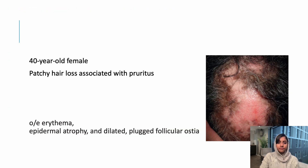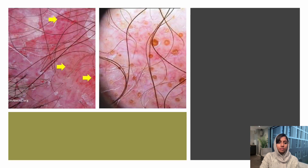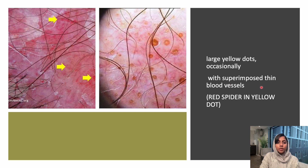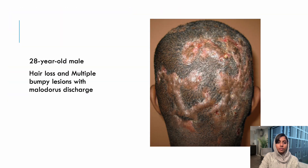The next scenario: a 40-year-old female with complaints of patchy hair loss associated with perifolliculitis. On examination, you can see erythema, epidermal atrophy, and dilated hair follicles plugged with keratin. On trichoscopy, there are yellow dots — dilated follicles filled with keratin — and also dilated blood vessels. This is a typical feature of discoid lupus erythematosus. The finding of large yellow dots with superimposed blood vessels is known as the 'red spider in yellow dot' appearance.